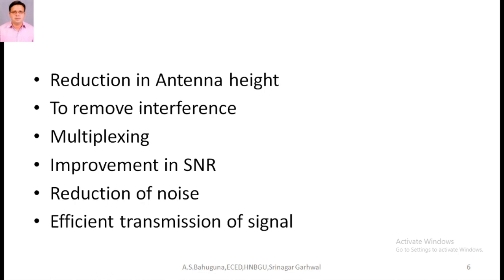The next reason is to remove interference. The interference problem can be removed with the help of the allocation of separate frequency bands to different message signal transmissions. Next, we have multiplexing. With the help of multiplexing, multiple signals can be transmitted through a single channel at the same time. Without modulation, multiplexing is not possible.